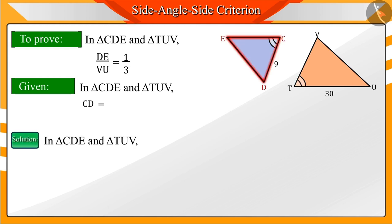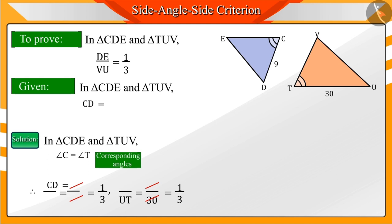We know that in triangles CDE and TUV, angles C and T are both the same. And also, the corresponding sides which contain these angles CD, EC and TV, UT are in the same ratio which is 1 by 3.